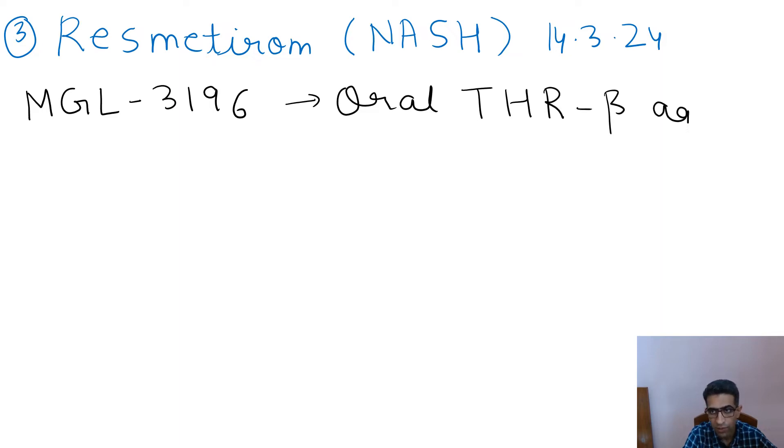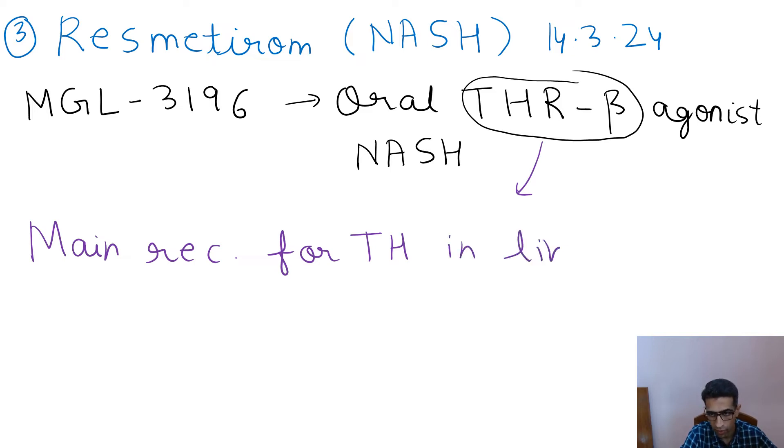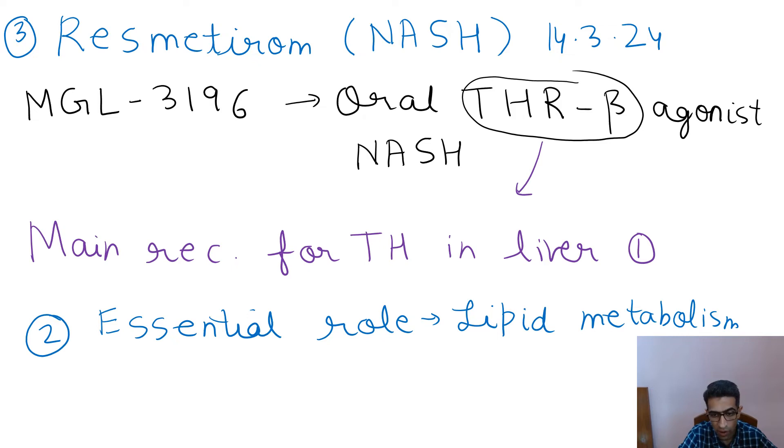THR-beta is the main receptor for thyroid hormones in the liver. It plays an essential role in lipid metabolism. In several clinical trials, THR-beta agonism has shown the potential to reduce inflammatory liver fat and fibrosis while lowering cholesterol and other atherogenic lipids.